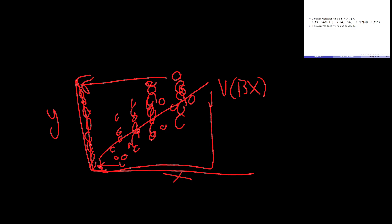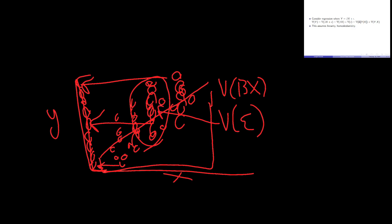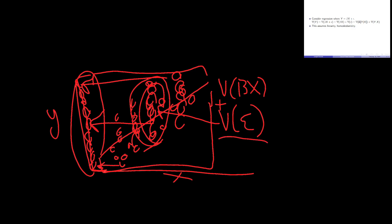But if you hold X constant, you get less variance. Say you hold X constant in the middle — you have the same mean as the total distribution, but less spread around the line. This is the variance of Y given X. The variance around the line plus the variance through the line actually equals the total variance of Y. The variance of the error is the non-explained variance, and the variance explained by X is the variance of the expected value of Y given X — the variance of X scaled onto Y with beta.